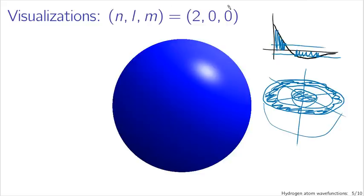These cases where l and m are both equal to zero have spherical symmetry, since the spherical harmonics — the part that gives you dependence on theta and phi — is trivial and constant. So for l and m both equal to zero, you just end up with concentric spherical shells where the particle is likely to be found. The number of regions where the particle is unlikely to be found — where the wave function crosses zero — is essentially given by n minus one.